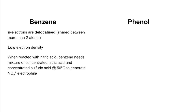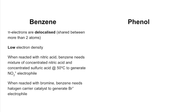For example, when reacted with nitric acid, benzene needs a mixture of concentrated nitric acid and concentrated sulphuric acid at 50°C to generate the NO₂⁺ nitronium ion electrophile. When benzene is reacted with bromine it needs a halogen carrier catalyst to generate the Br⁺ electrophile. So you can see from that that benzene is quite unreactive.